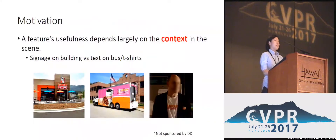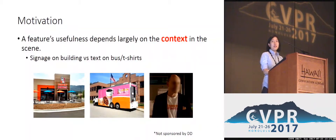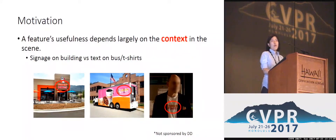For this task, some features are more useful than others. While existing work focuses their analysis on individual local features in general, we point out that a feature's usefulness depends largely on the context in the scene. For example, cyan buildings are useful, while cyan buses and t-shirts are misleading.